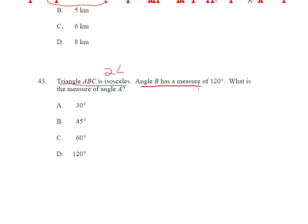Angle B has a measure of 120. What is the measure of angle A? Well look, really all you have to do is this. All triangles have angles that are going to add up to 180 degrees. So subtract 120.